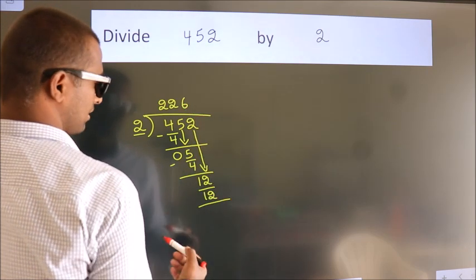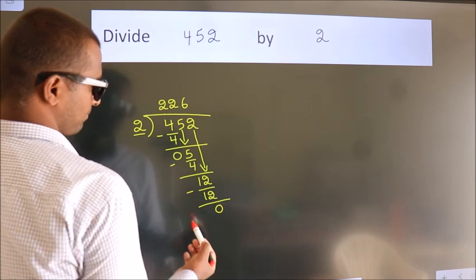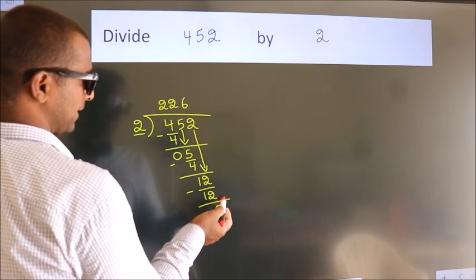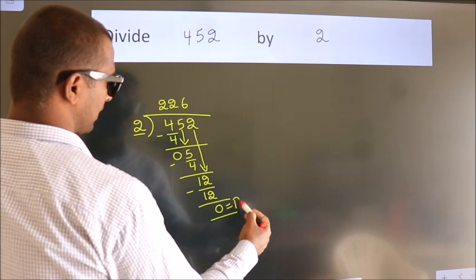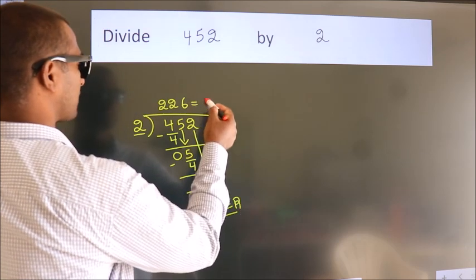Now we subtract. We get 0. No more numbers to bring it down. So we stop here. This is our remainder. This is our quotient.